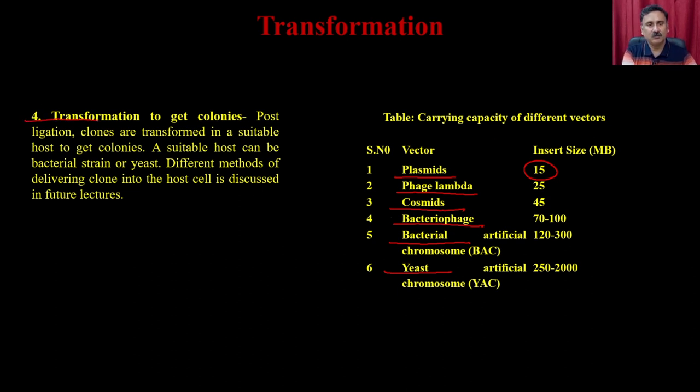In step 4, you perform transformation to get colonies. Post-ligation, the clones are transformed into a suitable host — bacterial strain or yeast — to get the colonies. Different methods of delivering a clone into the host will be discussed when we cover overexpression. This completes the genomic library approach. In the next lecture, we will discuss the cDNA library approach.